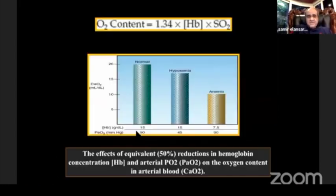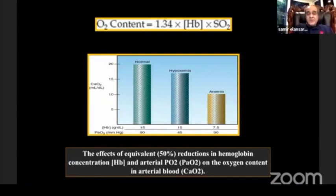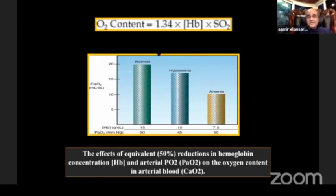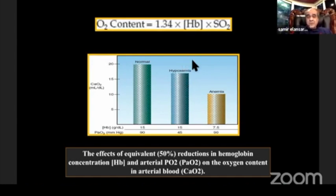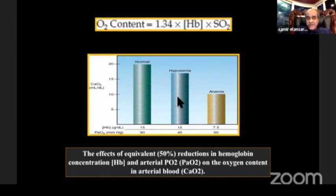We have to be oriented with this basic physiology. Oxygen content is more important and mandatory than oxygen pressure. Oxygen pressure reflects what happens at the lung level, but oxygen content tells you how much oxygen is in the body — it depends on hemoglobin concentration and saturation. If the patient suffers a 50% drop in hemoglobin, it will affect oxygen content much more than a 50% drop due to hypoxemia. Suppose oxygen pressure reaches 45 mmHg and hemoglobin reaches 7.5 — the effect on oxygen content is larger in anemia.